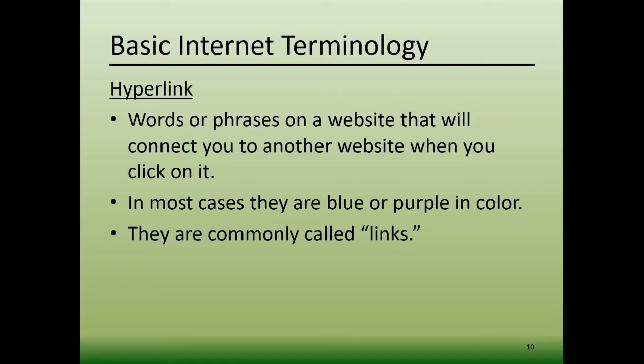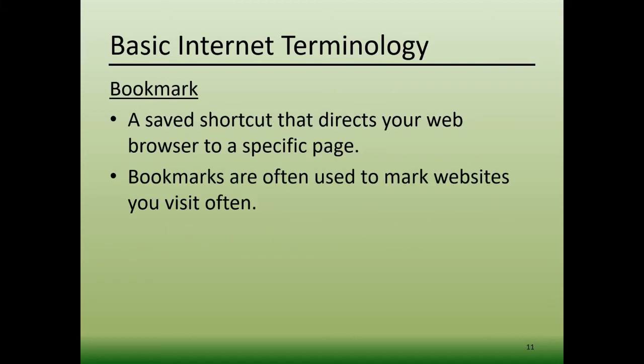Typically, hyperlinks are blue in color and they may also appear purple if you have clicked on that hyperlink previously. Many people refer to them simply as links. Then there's bookmark. A bookmark is a saved shortcut that directs your web browser to a specific page, such as www.scenicregional.org or www.amazon.com. Bookmarks are often used to mark websites that you visit regularly.